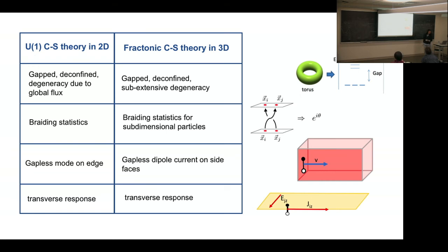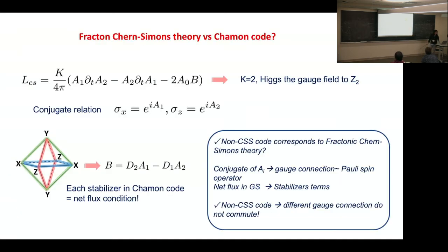In 2+1D Chern-Simons theory, gauge anomaly forces the boundary to be gapless. The same applies here: a gauge transformation invariant in the bulk produces gauge anomaly on the boundary for this higher-rank gauge theory, indicating gapless dipole currents propagating on the surface phases. These gapless degrees of freedom only survive on special boundaries — specifically boundaries parallel to the conservation planes — and there are no gapless degrees of freedom if the boundary is not parallel to one of those planes.